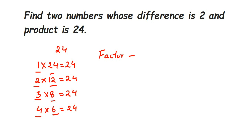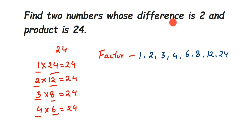From these factors, we have to select two numbers such that their product is equal to 24 and their difference — when you subtract those two numbers — is equal to 2. We need to find the right combination where the product is 24 and the difference is 2.